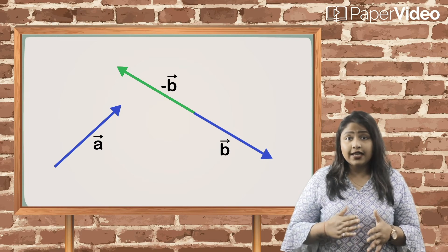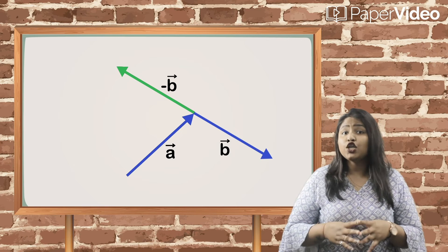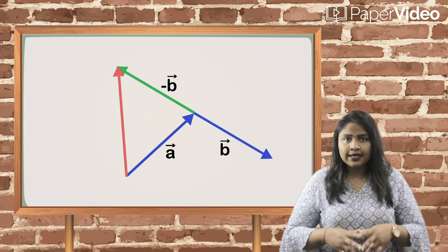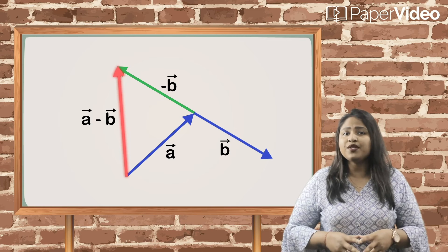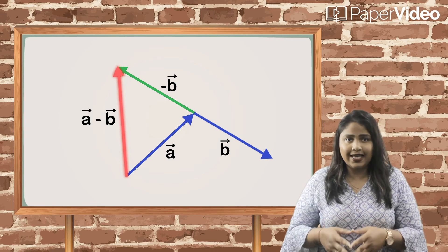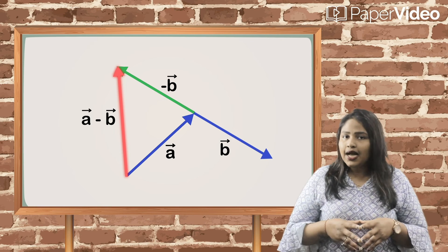Now, if we add vector A and negative vector B using triangle law of addition, then the resultant vector will represent subtraction of vector A and vector B.